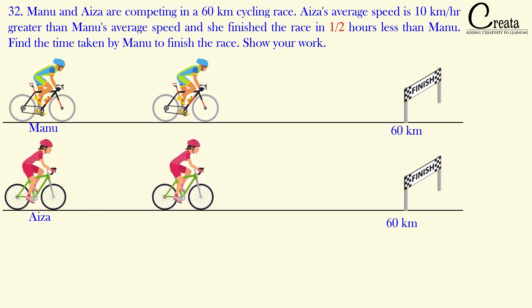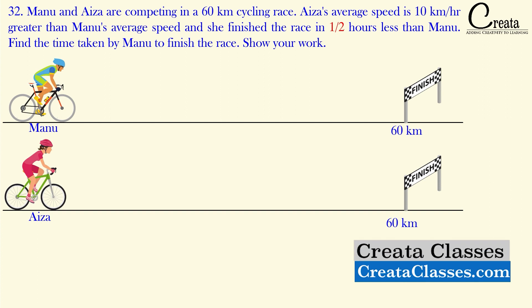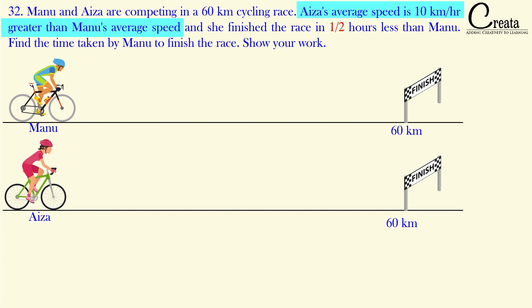Let's approach this question. In this question, Manu and Aiza are competing in a 60 kilometer cycle race. Two persons are given: Manu and Aiza. The total distance is 60 kilometers, so for Manu the distance is 60 km and for Aiza also the distance is 60 km. Further, it is given that Aiza's average speed is 10 kilometers per hour greater than Manu's average speed. Let's assume Manu's average speed as x kilometers per hour.